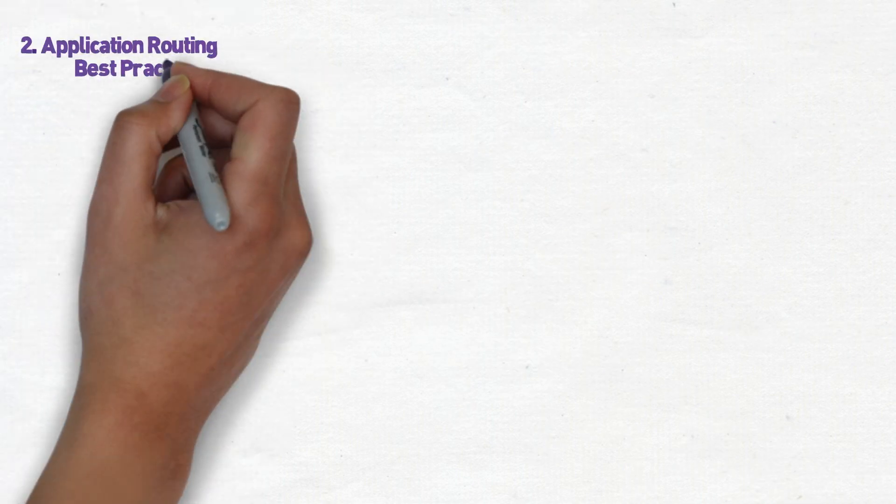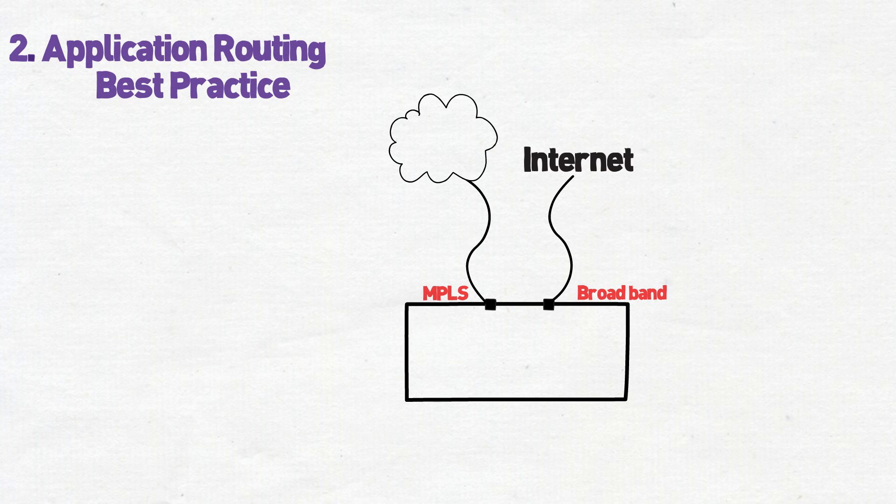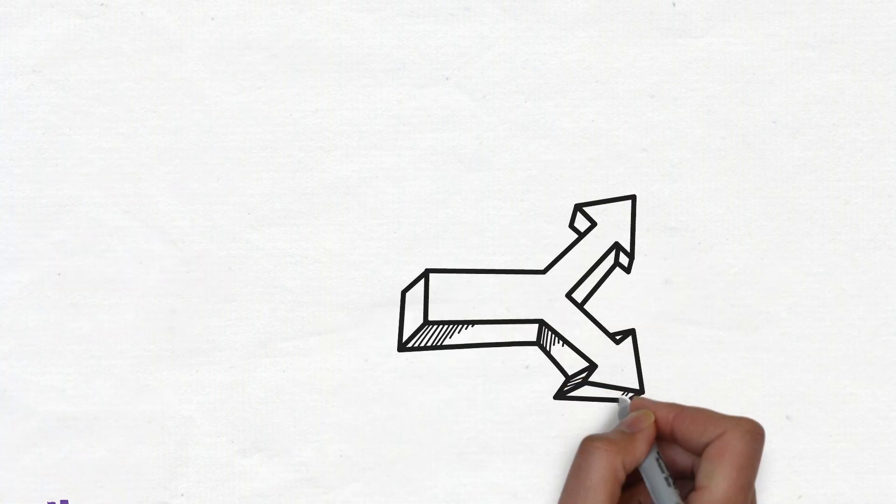Number two, application routing best practices. If you ultimately decide to offload security inspection to the cloud, then this point becomes all the more important. In SD-WAN, we create rules that specify where to route application or groups of application. So a question you'll have to ask yourself is, what do I do with applications that may be a security risk? Before you get to that point, you have to first identify the applications that are actually in use.